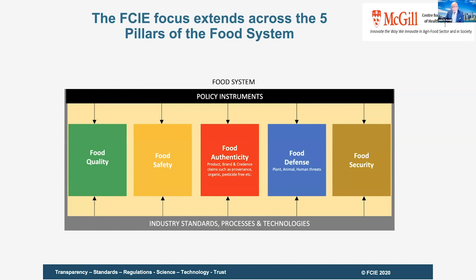We also look at the five pillars of the food system — it's not just about food safety. We look at food quality, food safety to bring safe products to market, and food authenticity. You may often hear the term food fraud, but here we talk about food authenticity — how do we know what food is authentic? Food fraud includes things like dilution, substitution, and mislabeling that make a food inauthentic.